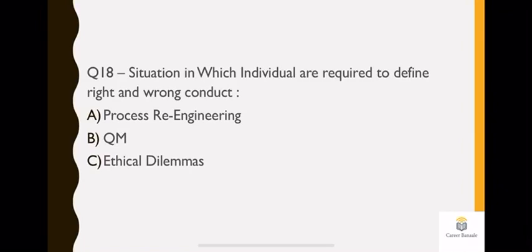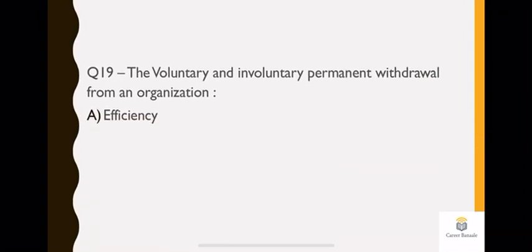Question 18: a situation in which individuals are required to define right and wrong conduct. What is this known as? Options are: process re-engineering, quality management, ethical dilemmas, or none of the above. It's very clear. If it's mentioned that you have to see things related to right and wrong conduct, that is always related to your ethical dilemmas. It is related to your ethics. So the answer will be option C, which is ethical dilemmas.